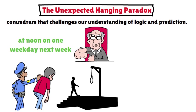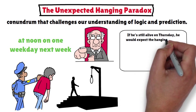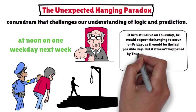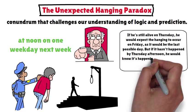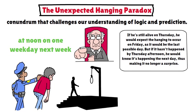Now, he reasons: If he's still alive on Thursday, he would expect the hanging to occur on Friday, as it would be the last possible day. But if it hasn't happened by Thursday afternoon, he would know it's happening the next day, thus making it no longer a surprise. By this logic, he concludes the hanging can't happen on Friday either.